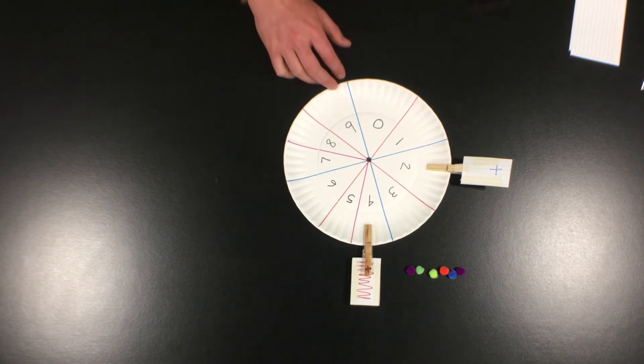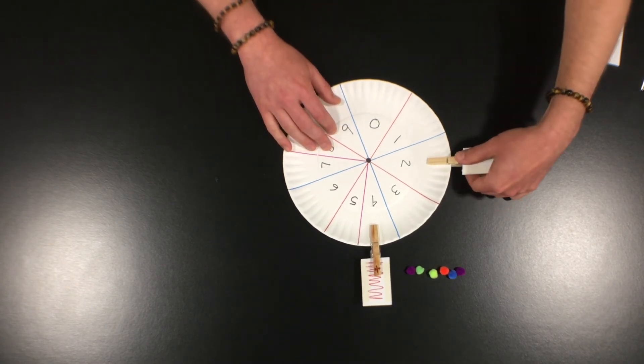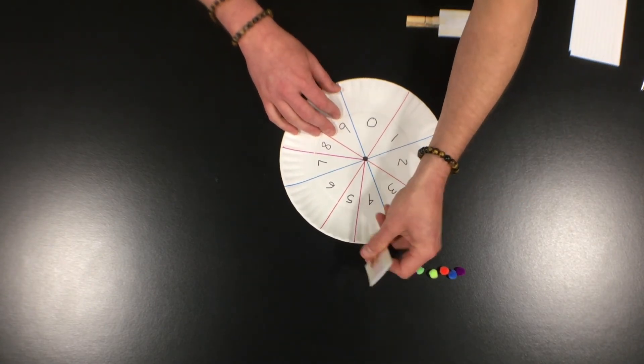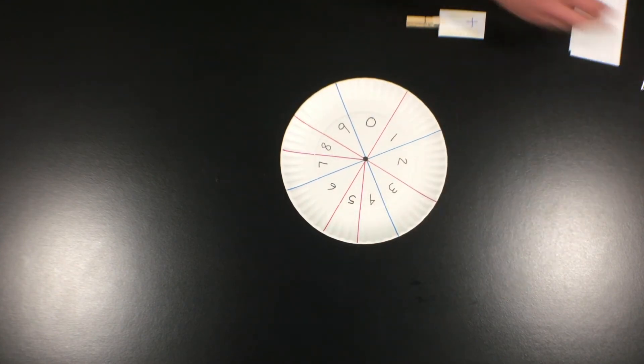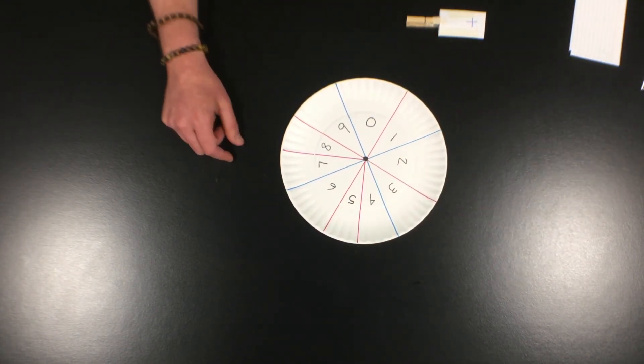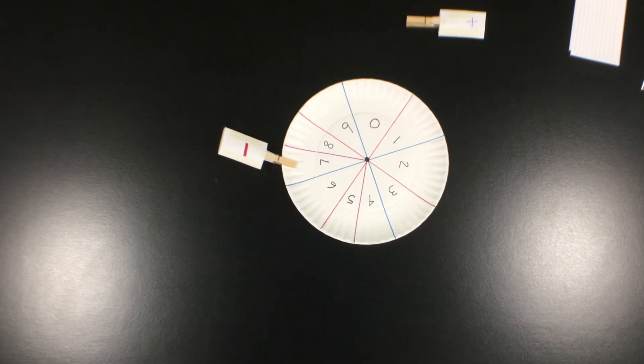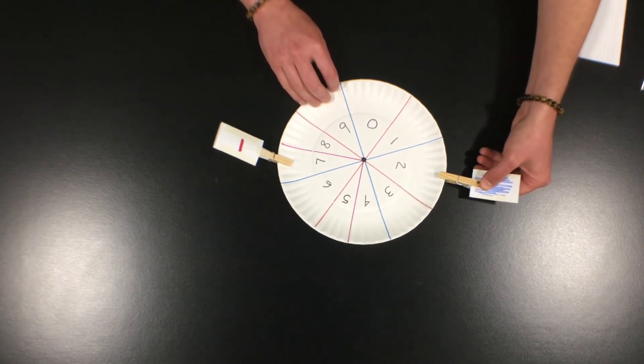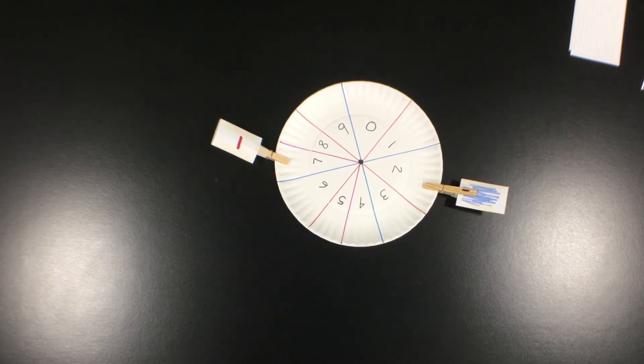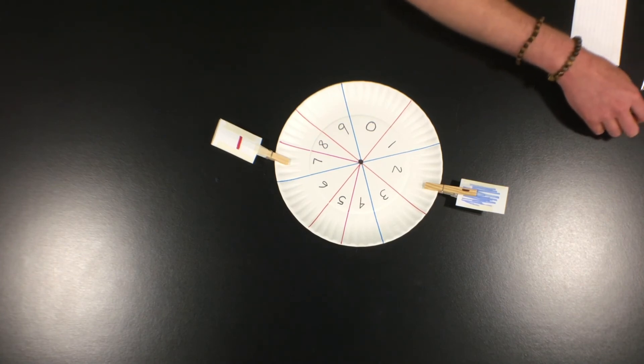If you would like to subtract, you can do that also. Just make sure that your first number is bigger or larger than the second. So get your minus sign ready and pick a large number. We have chosen seven. Seven minus. Now pick your second number and make sure the solid sign is up so you don't get confused with your operation. We have chosen two. Seven minus two.